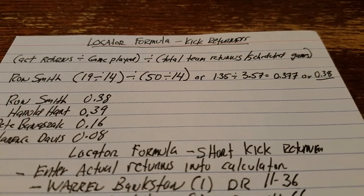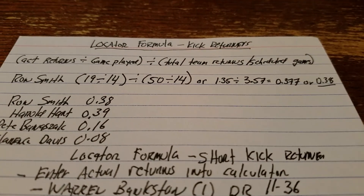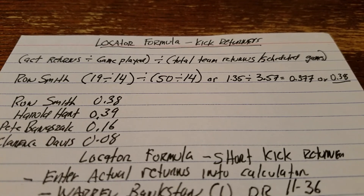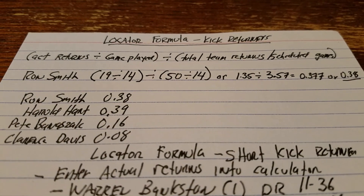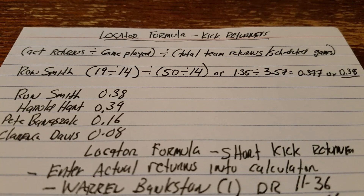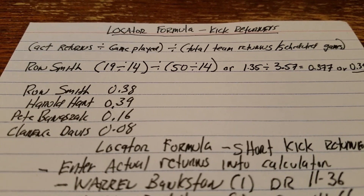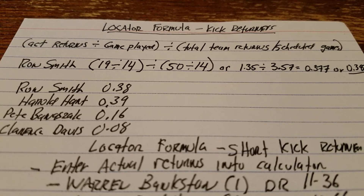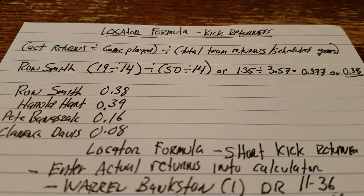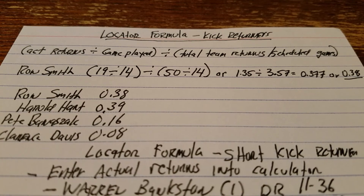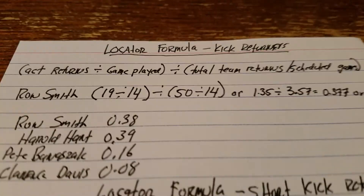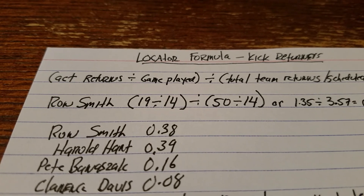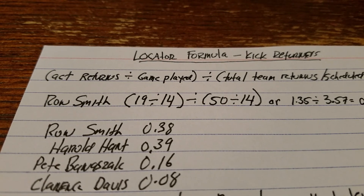Welcome to part two of OC kick returners. I just want to kind of go over the formula that I use to determine their locators. Since I do everything on a per game average, if the player didn't play in that game, the player's not going to be in there. So this is the formula that I use, and this is for kick returners.